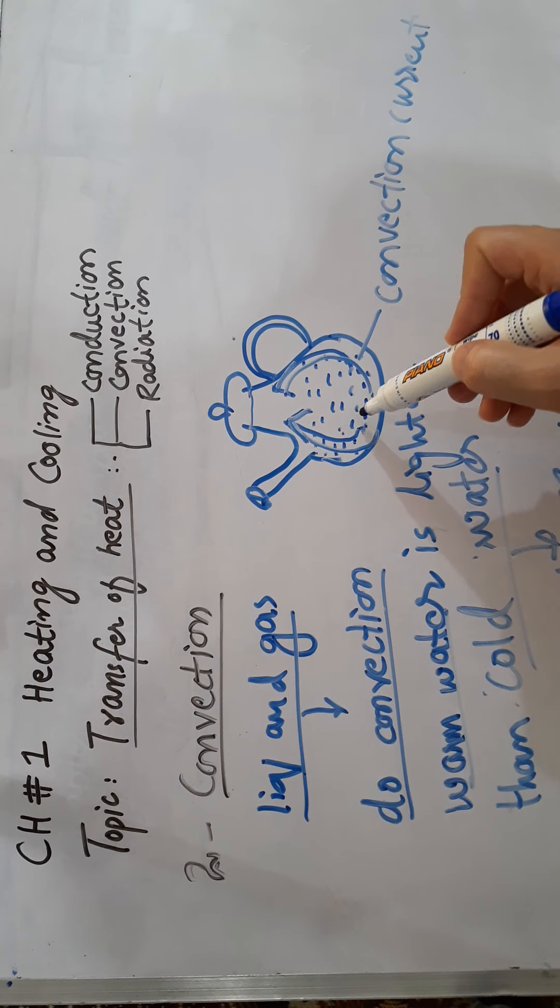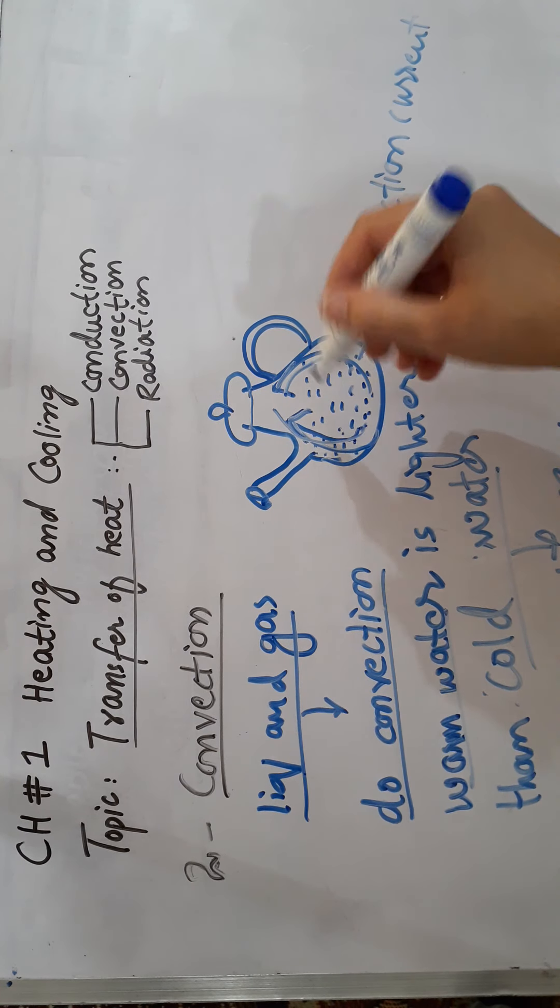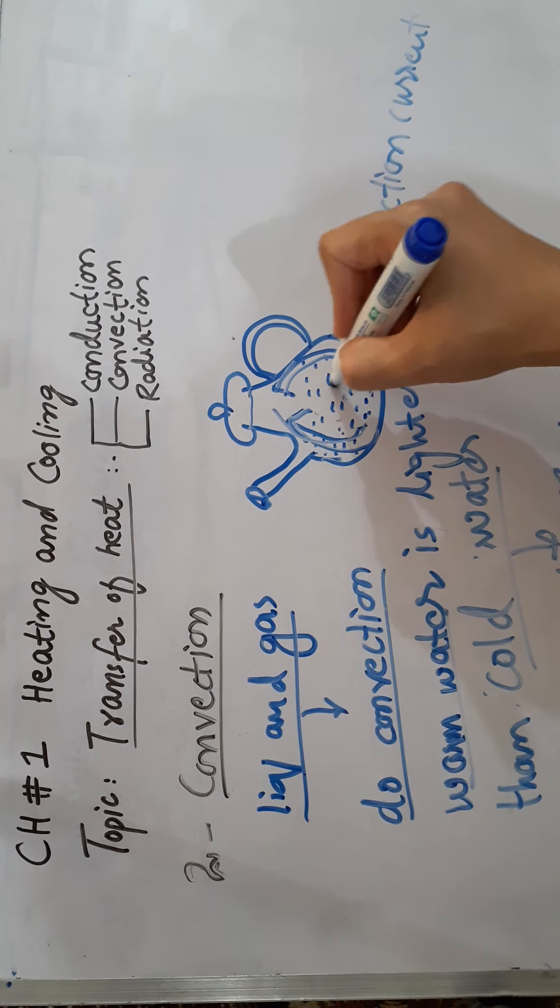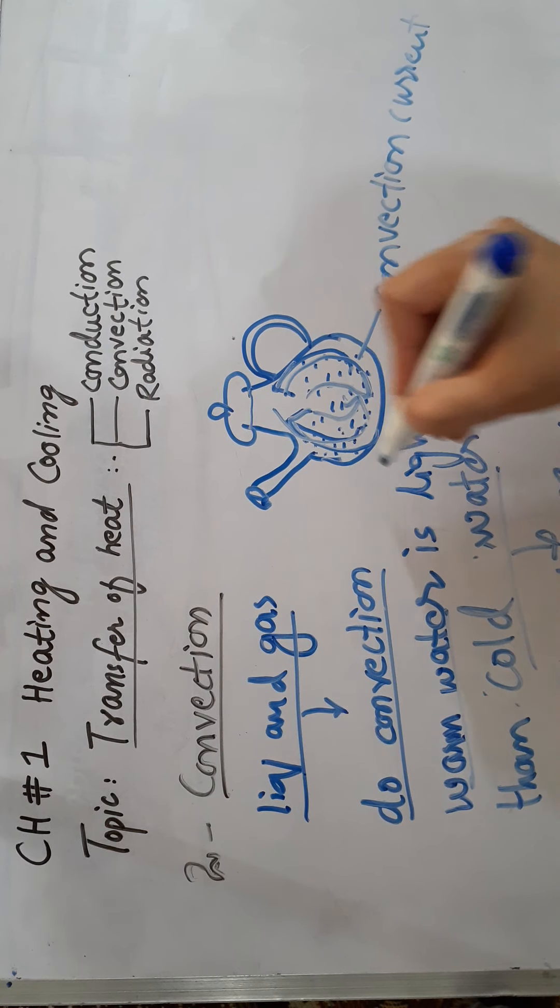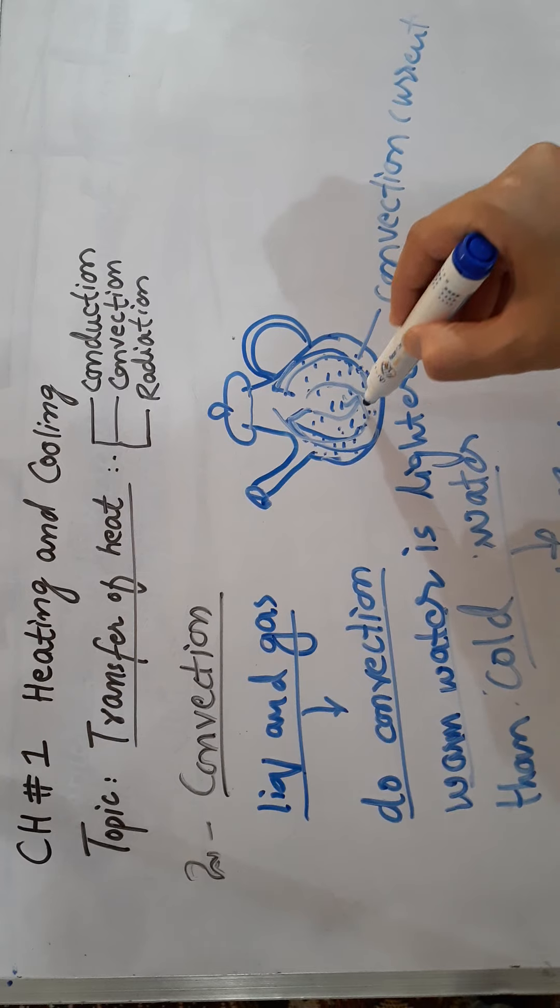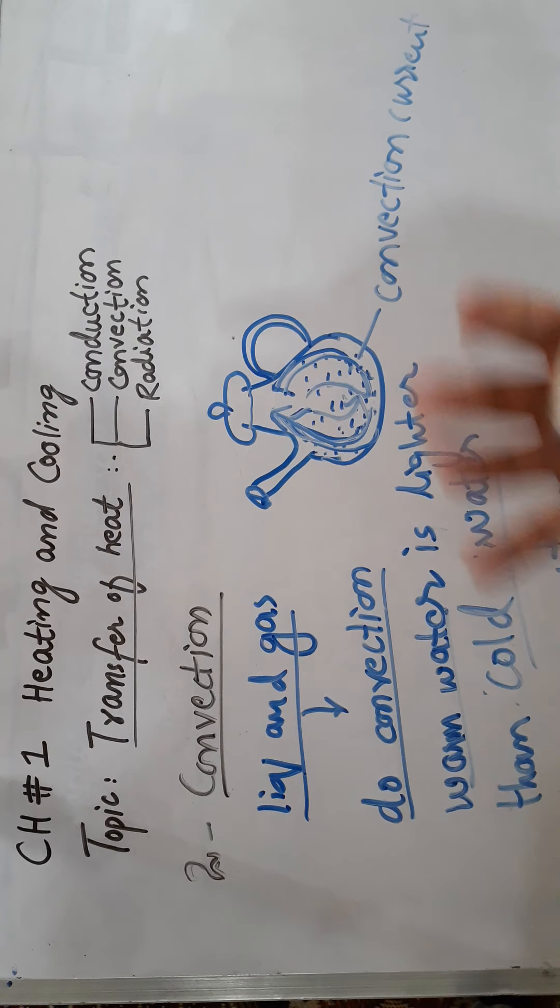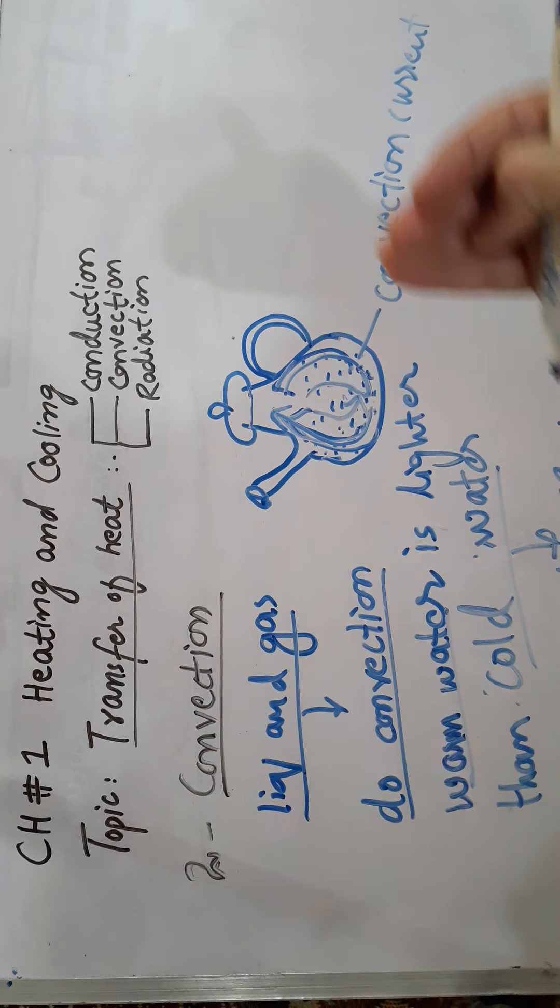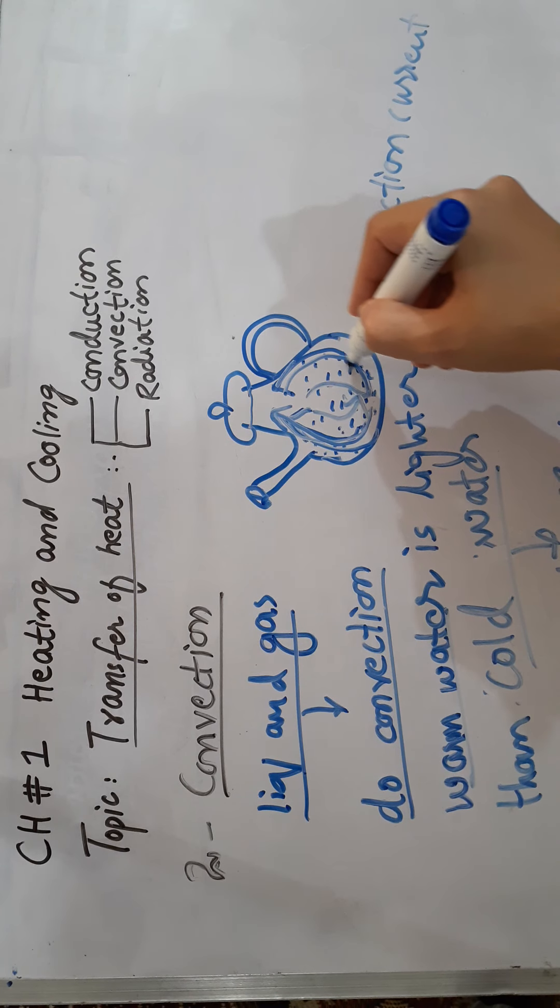This movement of warm water towards upside and movement of cold water downward is called convection current. Isse talha kettle mein, jaisae pani, níche wala pani garam hoota hai, woh oopar ki taraf jana shurru kar dayeta hai. Because of less density.